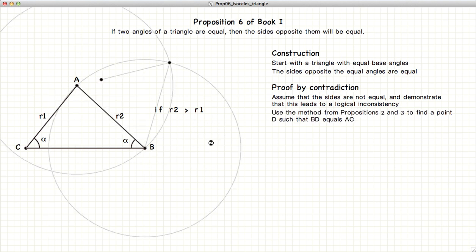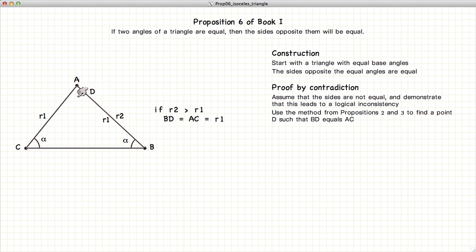So if that's the case, using the methods described in Propositions 2 and 3, we'll define a point D such that DB is also equal to R1. Connect the line from C to D and now we have two triangles.